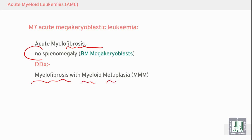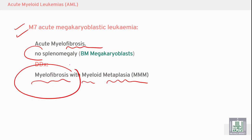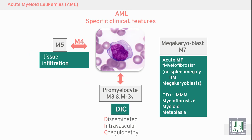M7 must be differentiated from myelofibrosis with myeloid metaplasia, which is a different condition. To summarize, the specific clinical features of AML are: DIC in M3, tissue infiltration in M4 and M5, and myelofibrosis in M7.